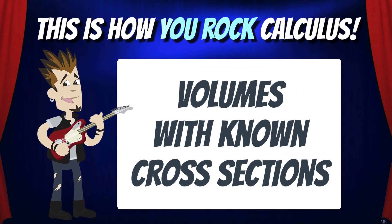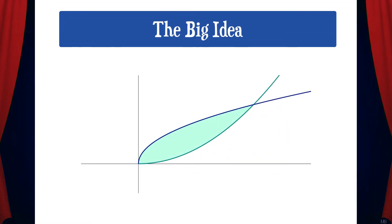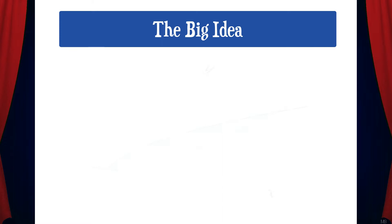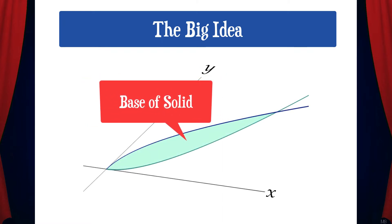In this video we're going to learn about volumes of solids with known cross sections. Suppose we have a region that lies between two curves. This region will serve as the base of a solid. Looking at the xy-plane from a different angle to get a three-dimensional perspective, we can see that from this base, many different cross-sectional shapes can emerge, and an infinite number of cross-sectional shapes would form a solid.